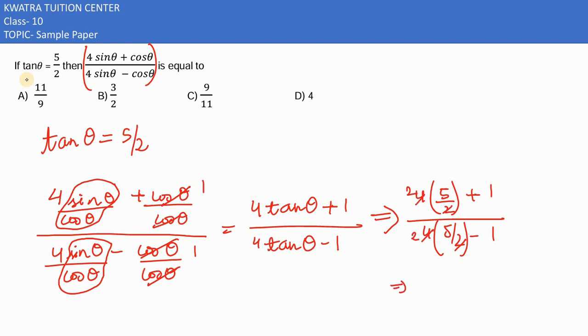The 4 and 2 cancel, leaving 2. This would be 2 as well. 2 times 5 would become 10. 10 plus 1 is there, 10 minus 1 is there.